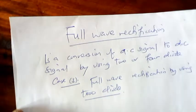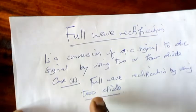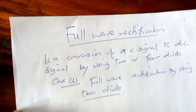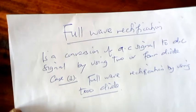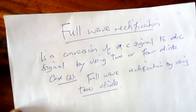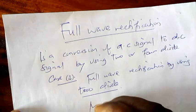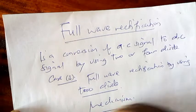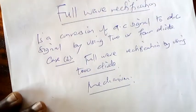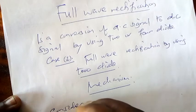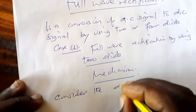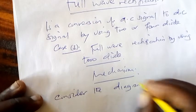Full wave rectification by using two diode is when the alternative current is allowed to flow in two diode. We're going to use two diodes to convert alternative signal to direct signal. First of all, let us look at the mechanism. Consider the diagram below.